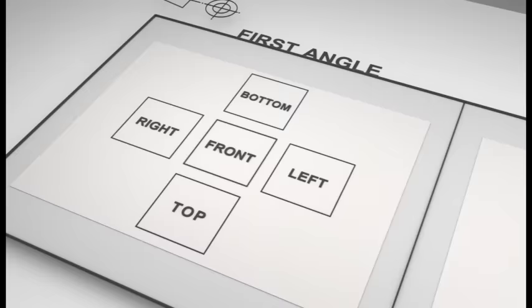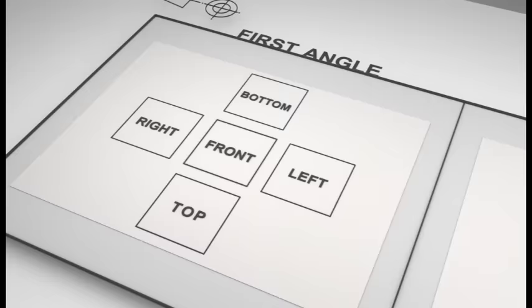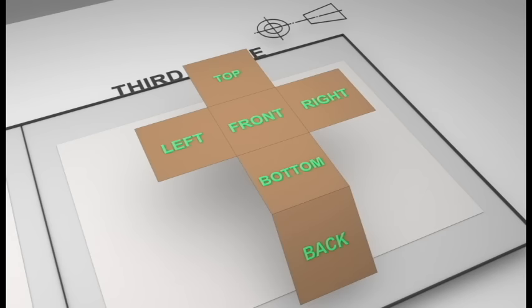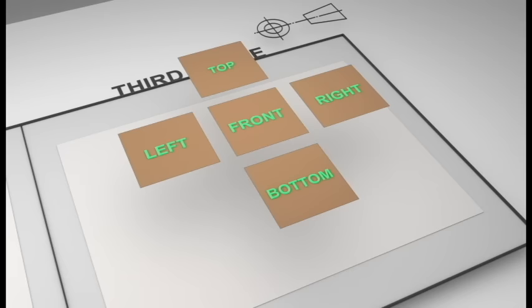For third angle, I like to think of it as if you're unfolding a cardboard box into that traditional flat pack pattern. Looking at the front view itself as if that's all you've got to start with, what would be on the right hand side of that object would come out to the right, and what would be at the top will come out above it.